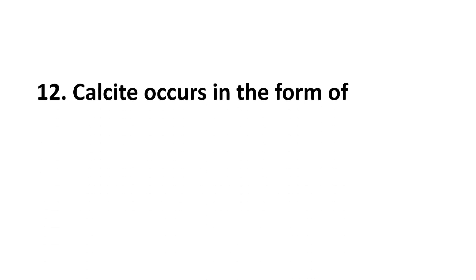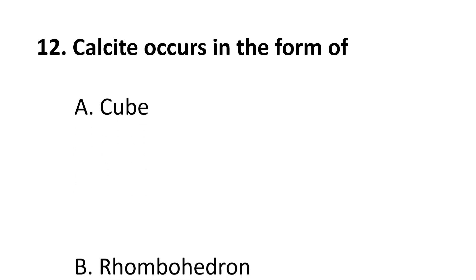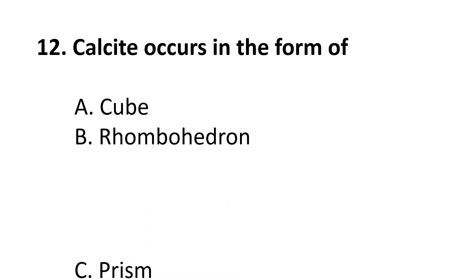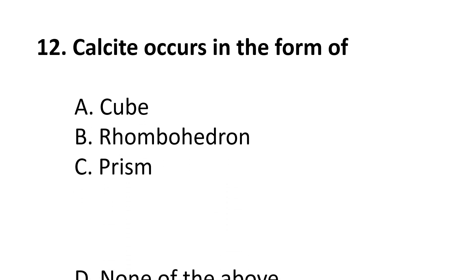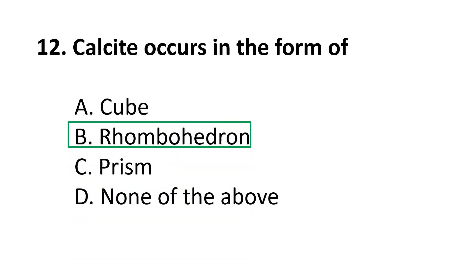Question 12: Calcite occurs in the form of — A. cube, B. rhombohedron, C. prism, D. none of the above. The correct answer is B, rhombohedron.